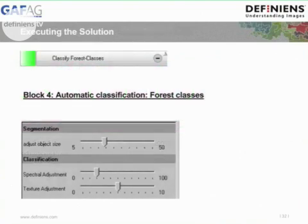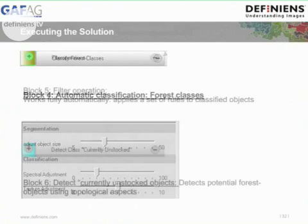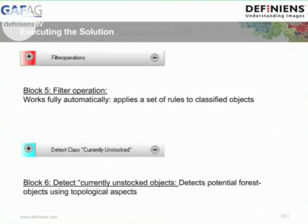After this step we have a perfect forest non-forest class. Then we can execute the automatic classification of the forest classes, which is again a semi-automatic process with adjustments on the segmentation and classification. Filter operations will follow as a fully automatic step. Afterwards we detect the currently unstocked objects, which is also a semi-automatic operation that detects potential forest objects using topological aspects. The interpreter then has to decide whether each object is really a currently unstocked object and assign it to the class accordingly.